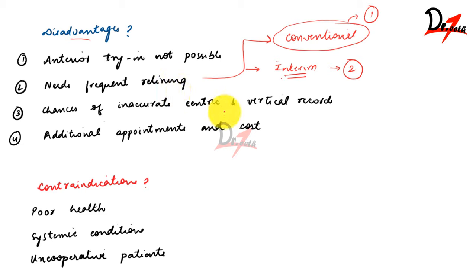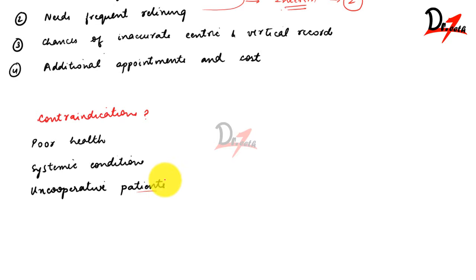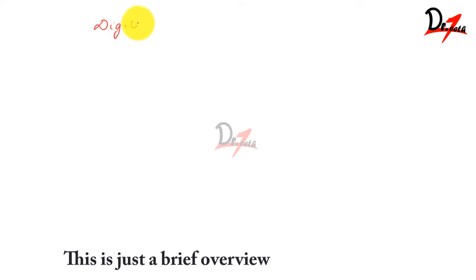There are also chances of inaccurate centric and vertical records. Additional appointments and cost are needed. Contraindications include poor health and systemic conditions where multiple extractions are not advisable — such as cardiac disease or uncontrolled diabetes where ridges may not heal properly. An uncooperative patient is also a contraindication, as the patient needs to be very cooperative and understanding of the entire process including surgical stenting and bone contouring.